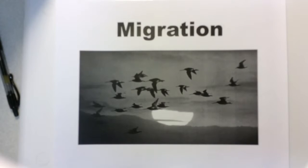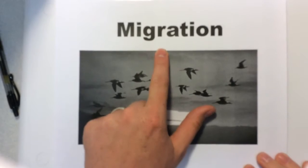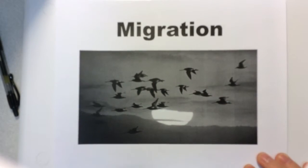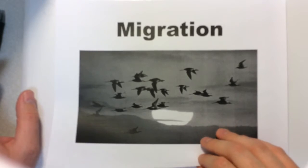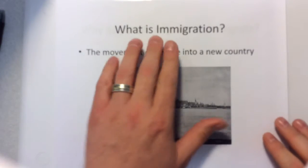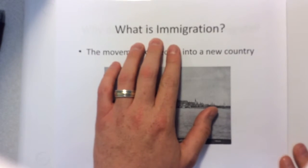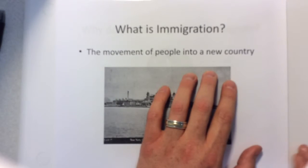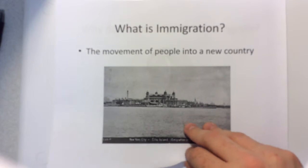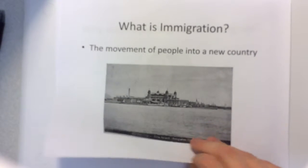Our next thing we're going to talk about is push and pull factors. It's going to start with migration and kind of work from there. Migration is people or animals moving from one place to another, and it's a temporary move. Then we have immigration, which is where people move to a new country and it's a permanent move. So migration is always temporary, immigration is always permanent.